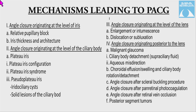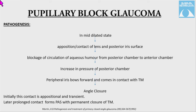Angle closure originating posterior to the lens includes malignant glaucoma, choroidal effusion and swelling of the ciliary body with anterior rotation, and angle closure after scleral buckling procedures, PRP, retinal vein occlusion, or posterior segment tumors. In pupillary block glaucoma, in the mid-dilated state, contact between the lens and posterior iris surface blocks aqueous flow from the posterior to anterior chamber, raising posterior chamber pressure, causing the iris to bow forward and contact the trabecular meshwork. Prolonged or recurrent episodes may cause peripheral anterior synechia and permanent trabecular closure.